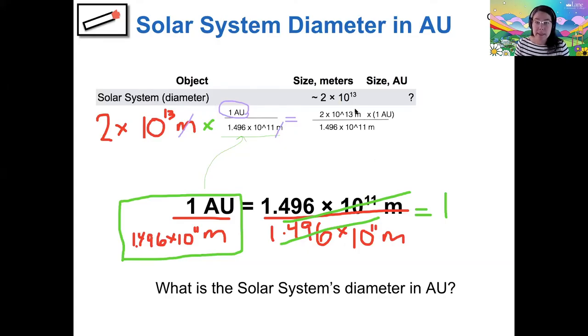All I've done is actually tidy this up. So again, my meters are actually canceled at this point. And my 1 AU will be left. And so the 1 doesn't matter. Multiplying by 1 is free. And so that means that the result of this calculation will end up with the units of AU.